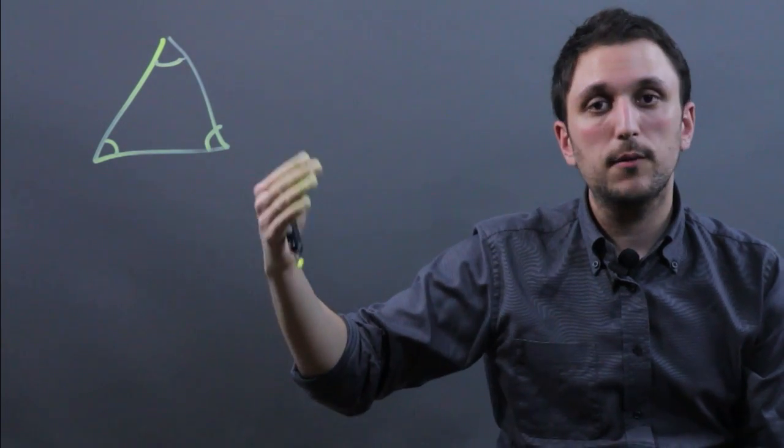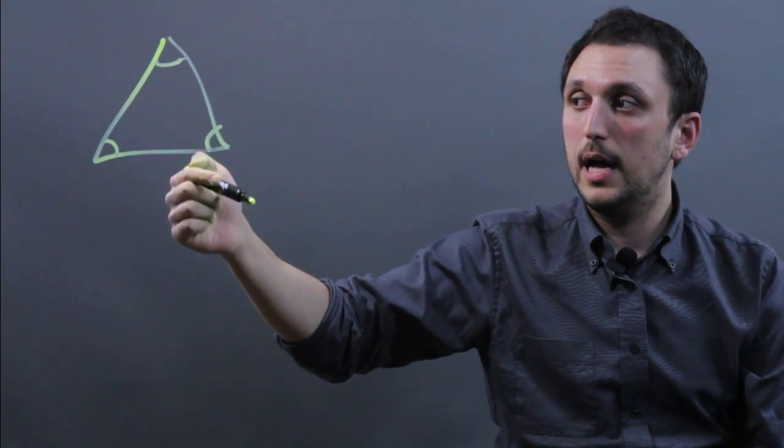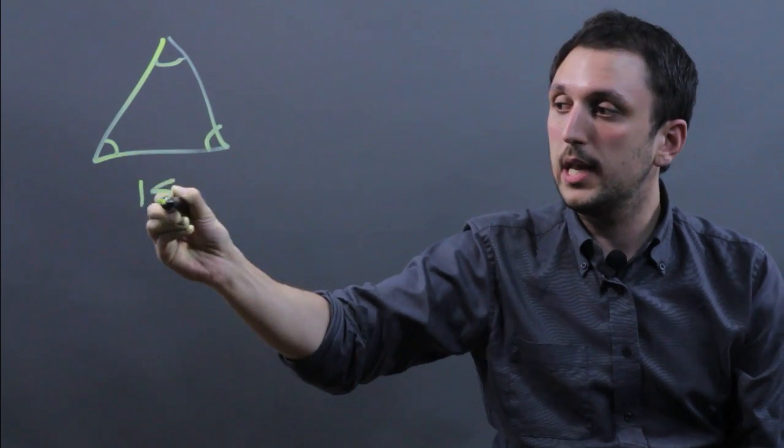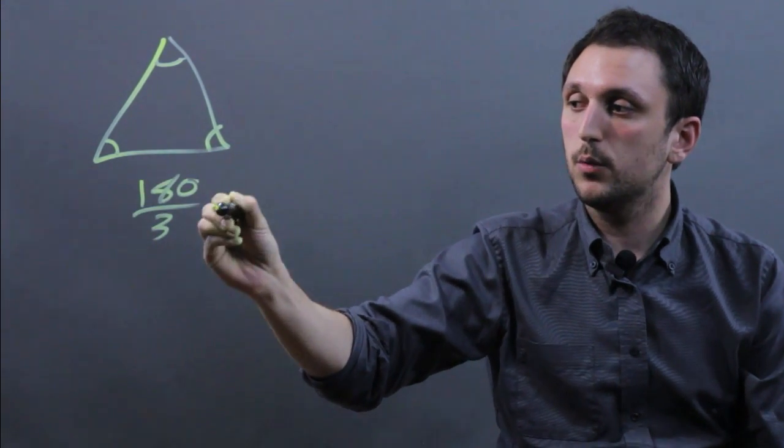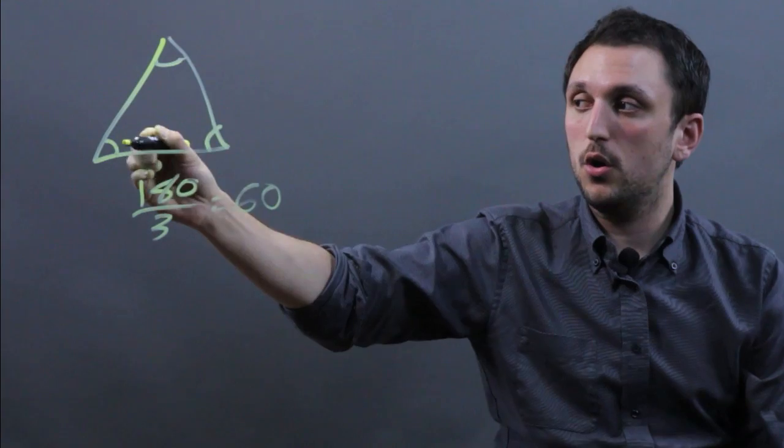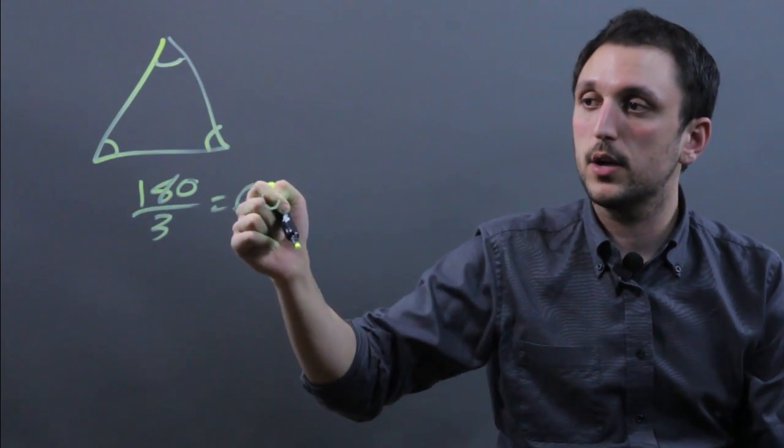Now if the sum of the measures of angles of a triangle have to be 180, then 180 over 3 equals 60. So that means all three angles are 60 degrees in an equilateral triangle.